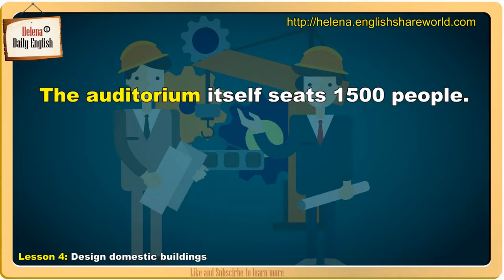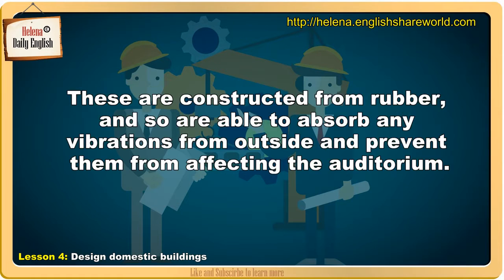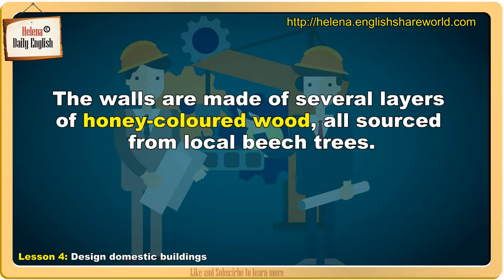The auditorium itself seats 1,500 people. The floor is supported by ten massive pads. These are constructed from rubber, and so are able to absorb any vibrations from outside and prevent them from affecting the auditorium. The walls are made of several layers of honey-coloured wood, all sourced from local beech trees.